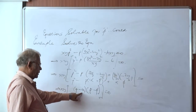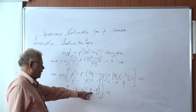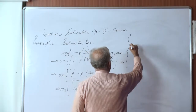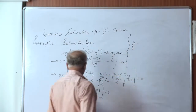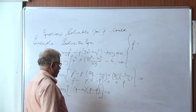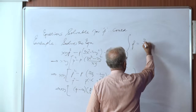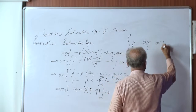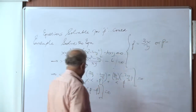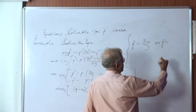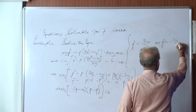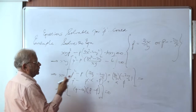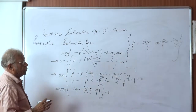So P is either α = 3x/y, or P is β = −2y/x. We will solve each of these and see what solutions we get.